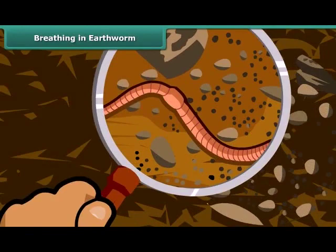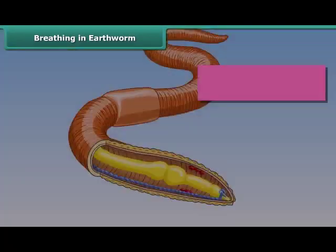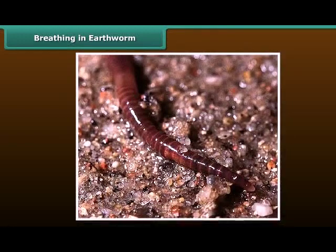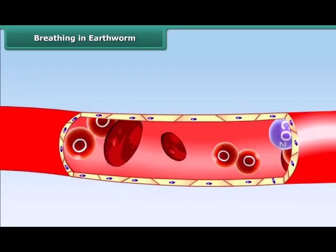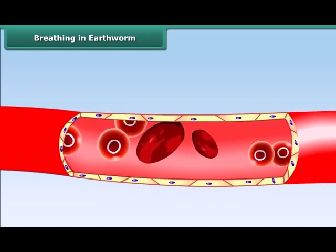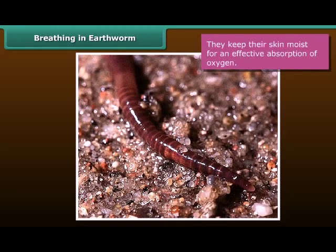Earthworms, like insects, do not have lungs, nor do they have a nose. They breathe through their skin, absorbing oxygen from air and soil. When oxygen comes in contact with their moist skin, it is absorbed through tiny blood vessels and circulated throughout the body. The same blood vessels carry the carbon dioxide to be expelled through the skin. For effective absorption of oxygen, earthworms keep their skin moist.